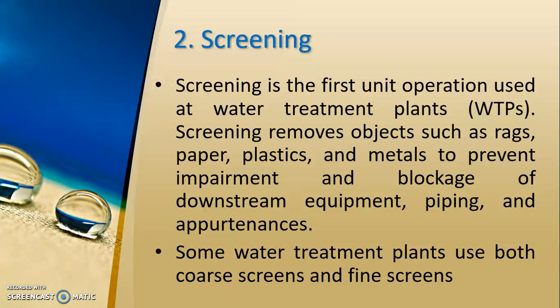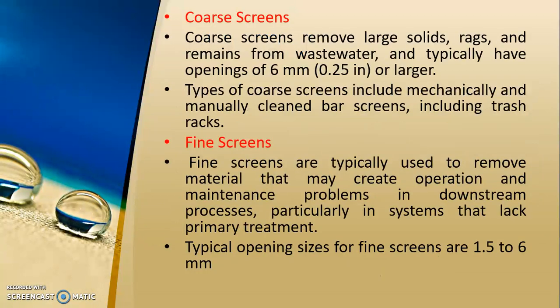Next is screening. When water reaches the water treatment plant, the first unit process it undergoes is screening. Screening removes objects such as rags, paper, plastics, and metals to prevent blockage of downstream equipment, piping, and appurtenances. Water treatment plants use both coarse screens and fine screens — coarse screens remove large size particles and fine screens remove comparatively smaller size particles. Coarse screens remove large solid debris and typically have openings of 6 mm or larger. Types of coarse screens include mechanically and manually cleaned bar screens, also called trash racks.